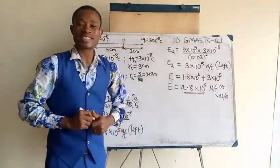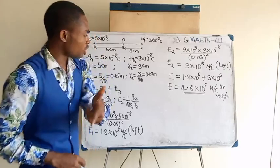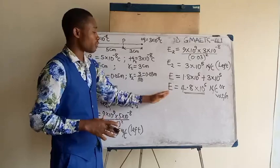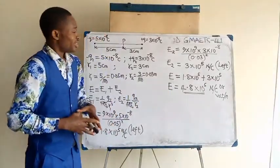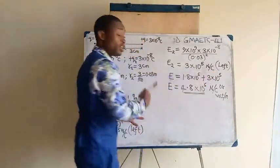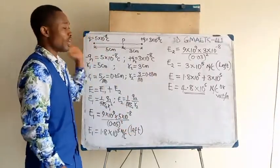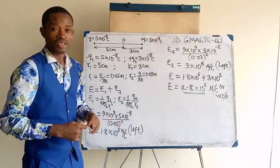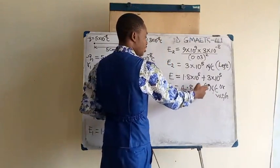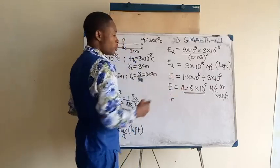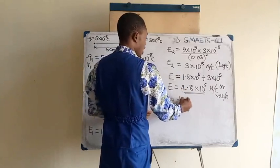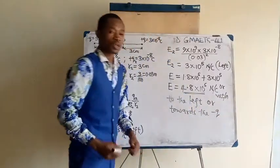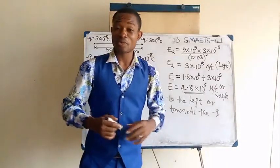And this is the resultant electric field at point P. In conclusion, the question would now be, what would be the direction of this resultant electric field? The examiner also requested the direction. Simply the answer would be judged based on the direction of the individual electric fields. E1 is moving to the left. E2 is also to the left. Definitely, it means that the resultant electric field will also take that direction left. So this is 4.8 times 10 to the power of 5 volt per meter or Newton per Coulomb, to the left or towards the negative charge. This is how you handle this problem.